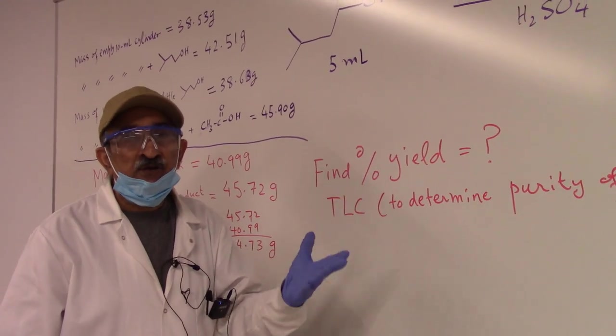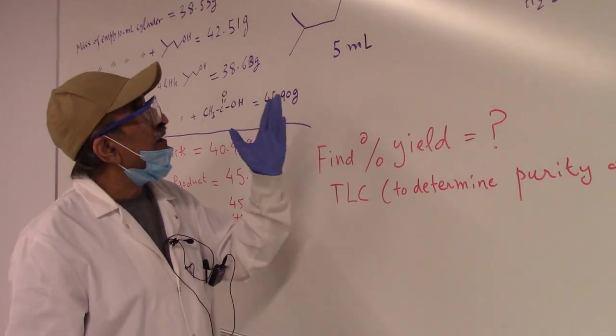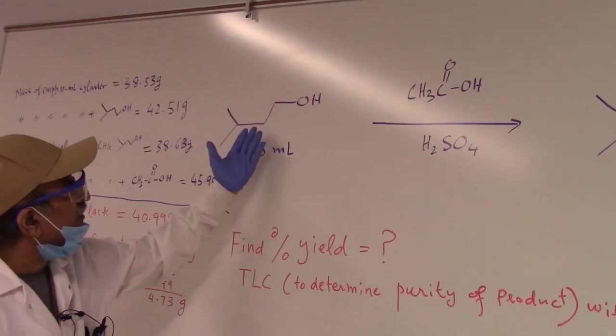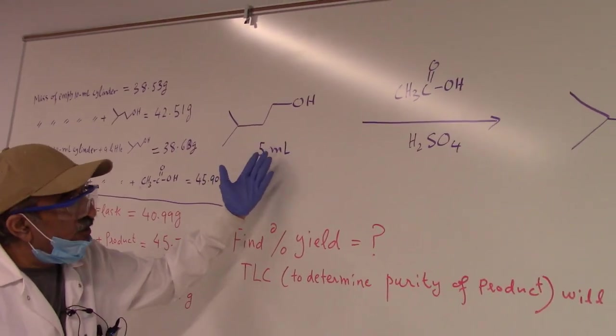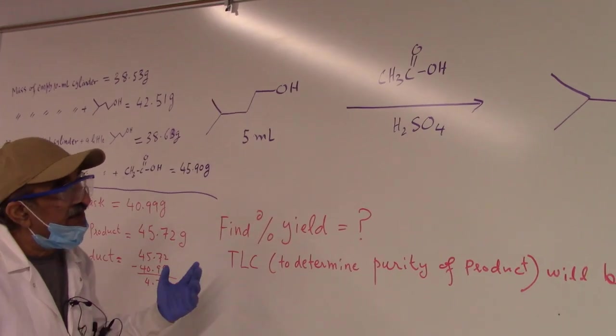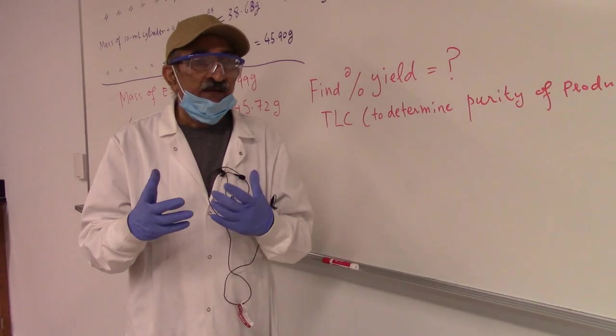You have to find out the percentage yield. To find the percentage yield, you need to find out the limiting reagent using stoichiometric equations. Once you determine the limiting reagent, based on that, you find out the percentage yield. And it's a one-to-one stoichiometry, so it should be easy to find out the percentage yield.